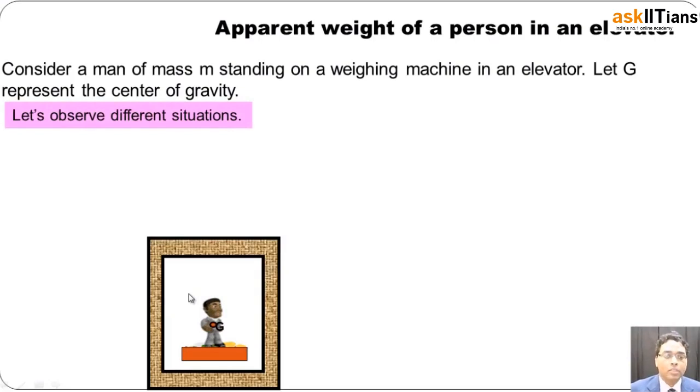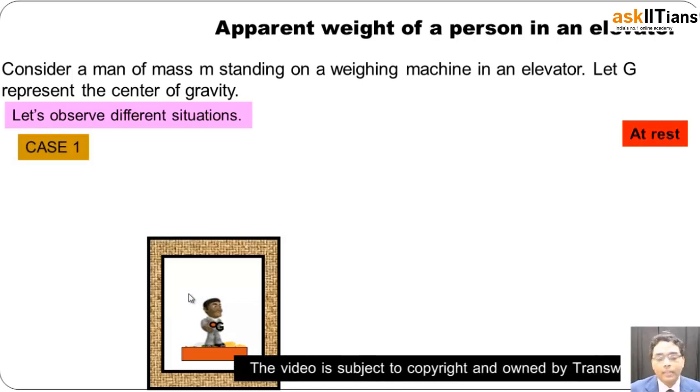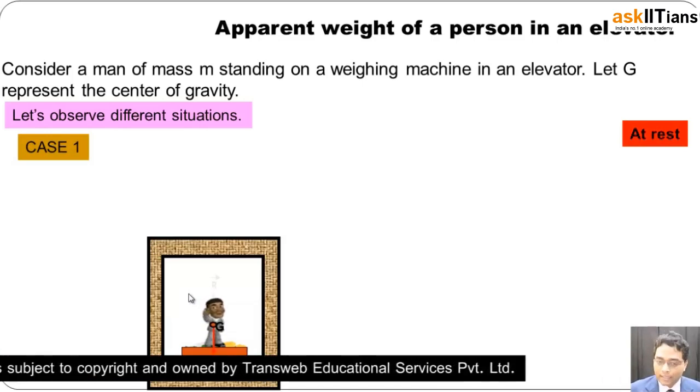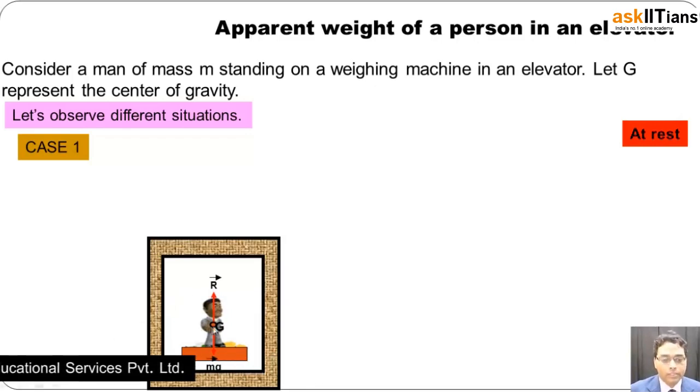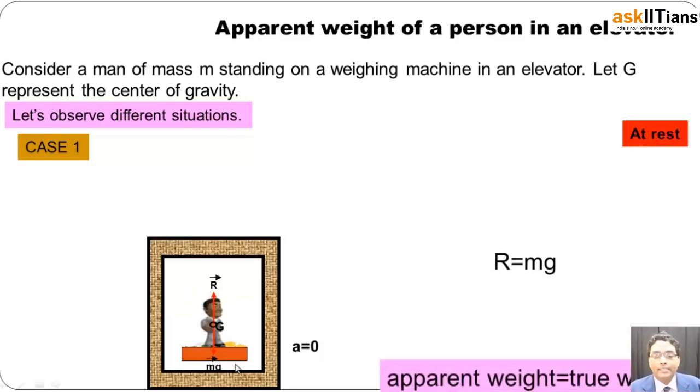What is going to happen? We need to observe a couple of situations. First one, case one: when it is at rest. When the person is at rest, there are going to be a couple of forces at the center of gravity. You will have a normal reaction R from this weighing machine, and mg is going to be the weight acting. These two are the forces acting on this mass. Since this object is at rest, acceleration is zero, and therefore the normal reaction R is going to balance the weight mg. The apparent weight in this case equals the true weight.